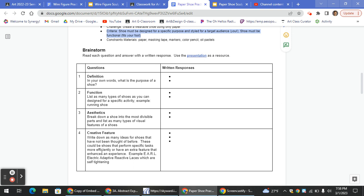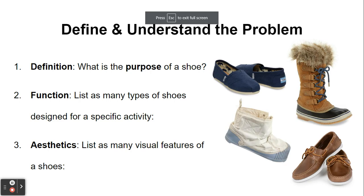There are several different questions on page two to complete — questions one through four. We're going to talk about those right now. The first thing I want you to do is try to define, in your own words, what is the purpose of a shoe. Think about how you can provide a broad definition that would fit all footwear. Second, function — list as many types of shoes designed for a specific activity. I'm not asking for brands of shoes; I'm asking for specific activities. For example, basketball shoes are designed for basketball.